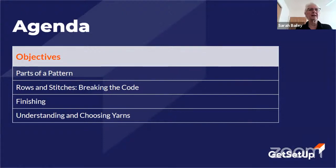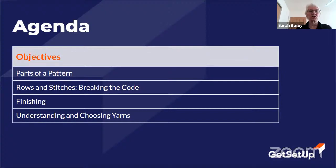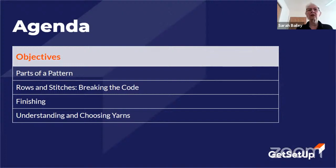Here's what we're going to be covering today: the parts of a pattern, how to read rows and stitches — which I consider the part of the pattern that looks like a code — and we're going to break that code today. We'll also look at the finishing instructions in a pattern, and if we have time we'll cover understanding and choosing yarns.